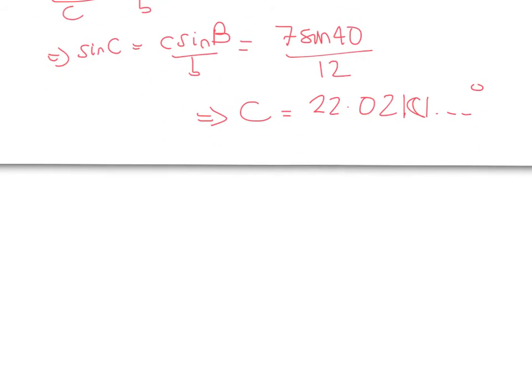There's a nice simple rule - all angles of a triangle must add up to 180. So to get A, we simply do 180, subtract the 40, and subtract the angle we've just calculated. We end up with A being 117.9782 degrees.